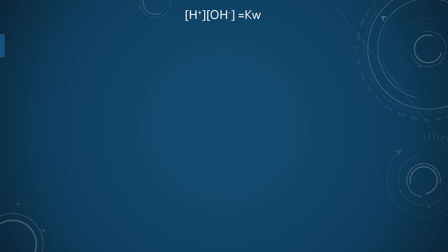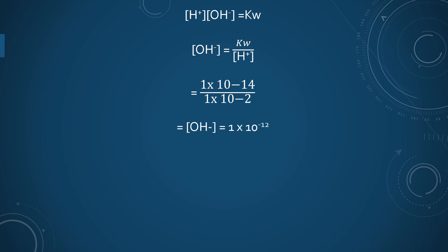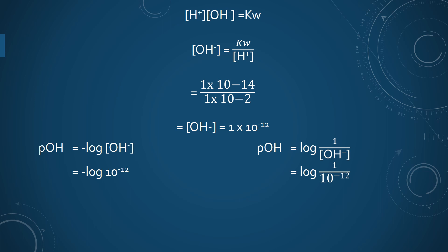We know the dissociation constant of water is equal to 1 × 10⁻¹⁴. Substituting the value of hydrogen ion concentration into this equation, we can calculate the hydroxyl ion concentration as 1 × 10⁻¹². So pOH equals the negative logarithm of the hydroxyl ion concentration, which equals 12. So the pOH of 0.01 molar HCl is 12.